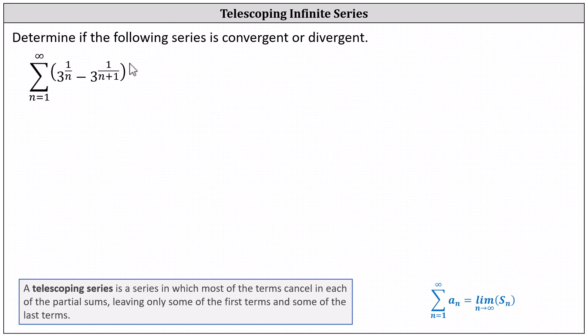This is a telescoping series. A telescoping series is a series in which most of the terms simplify out or cancel in each of the partial sums, leaving only some of the first terms and some of the last terms. What we'll do is determine a formula for the partial sum for the infinite series and then take the limit as n approaches infinity of the partial sum.